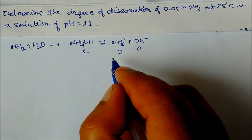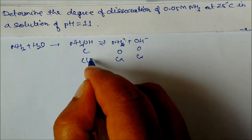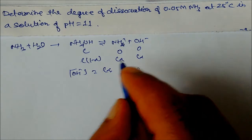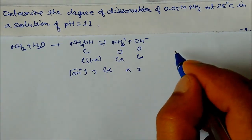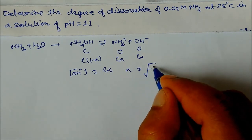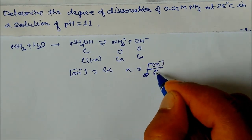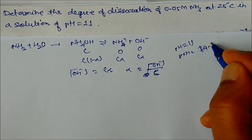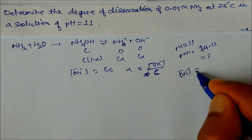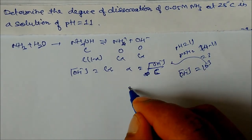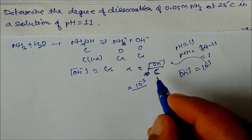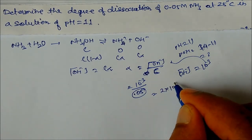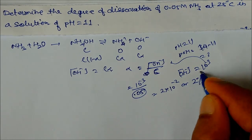Since pH = 11, then pOH = 14 − 11 = 3, so [OH⁻] = 10⁻³ mol/L. Since [OH⁻] = C·α, we get α = [OH⁻]/C = 10⁻³ / 0.05 = 2×10⁻² = 2%. So the degree of dissociation of ammonia in this solution is 2%.